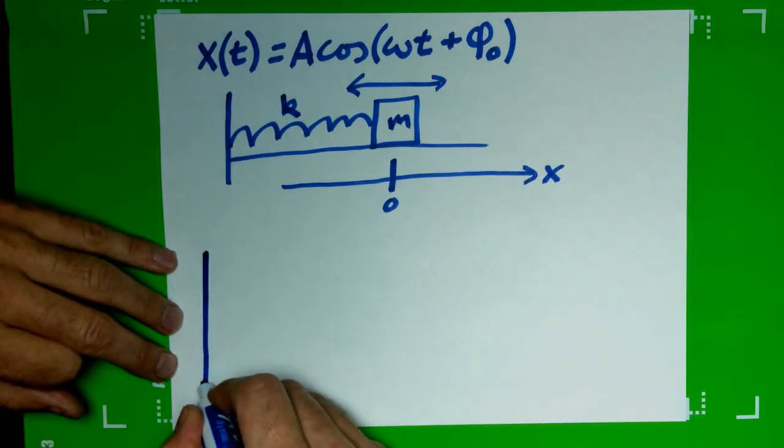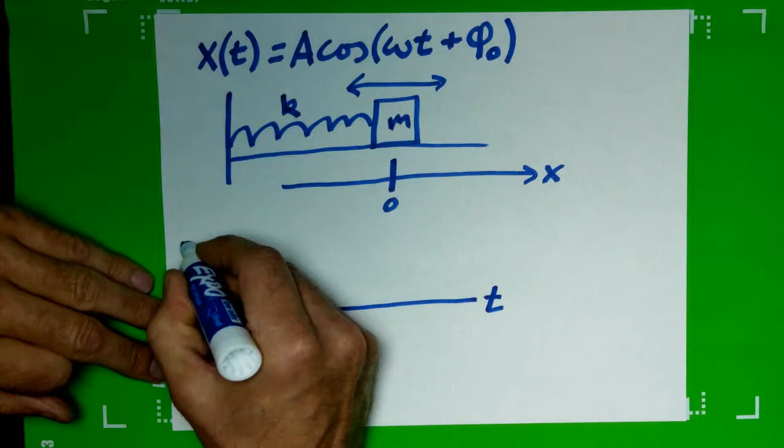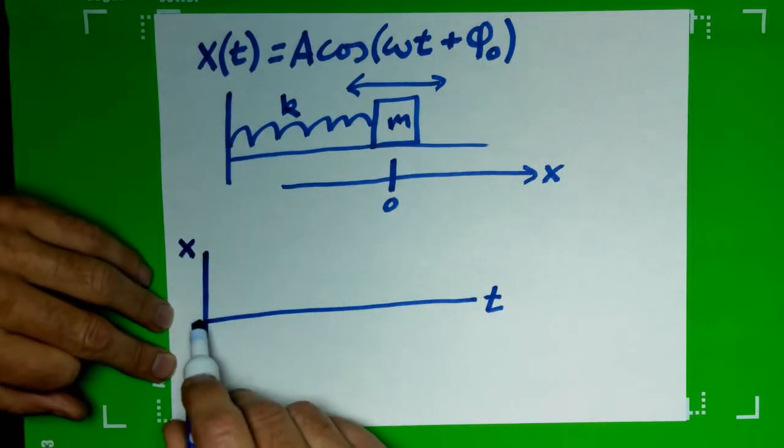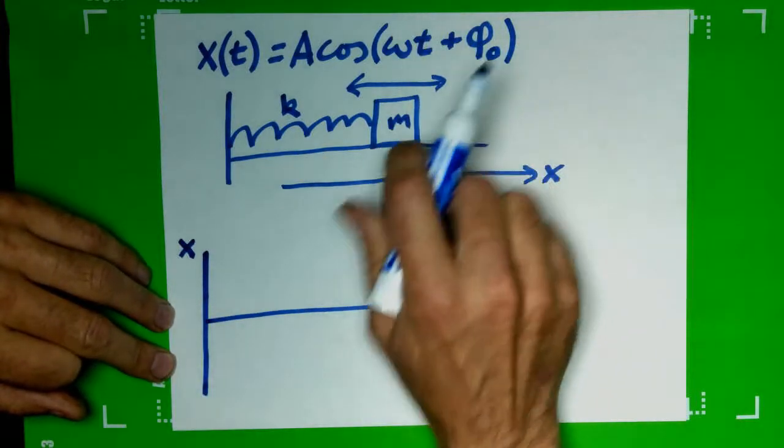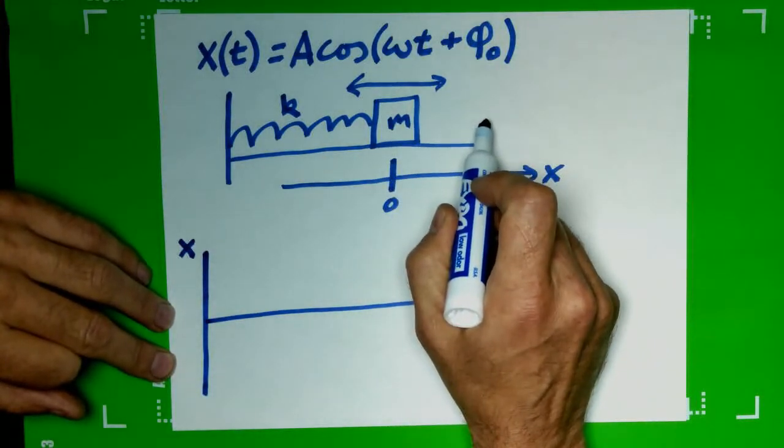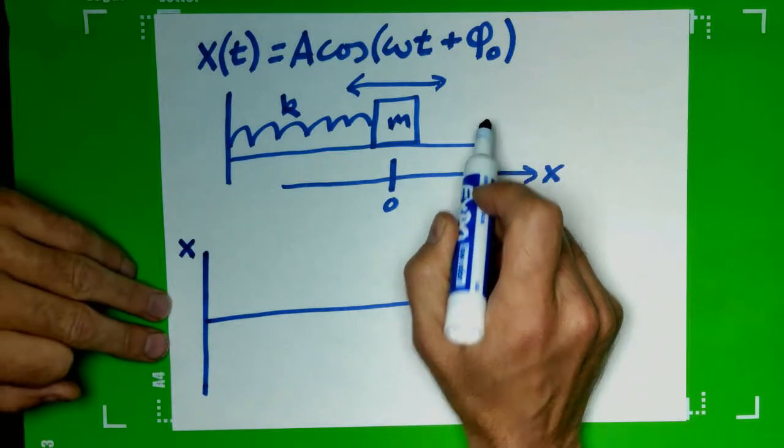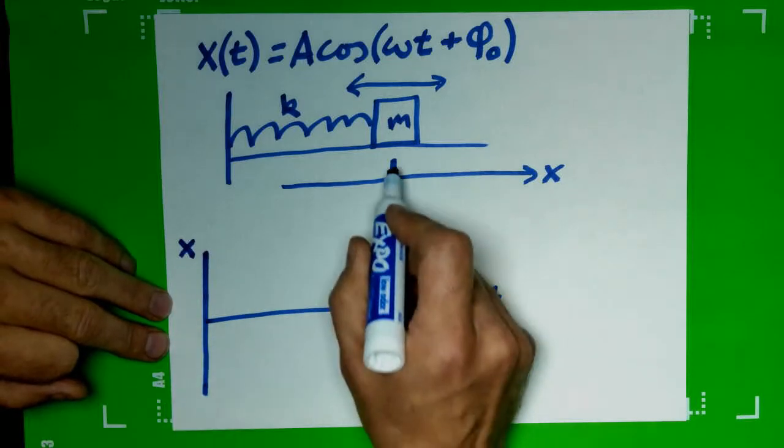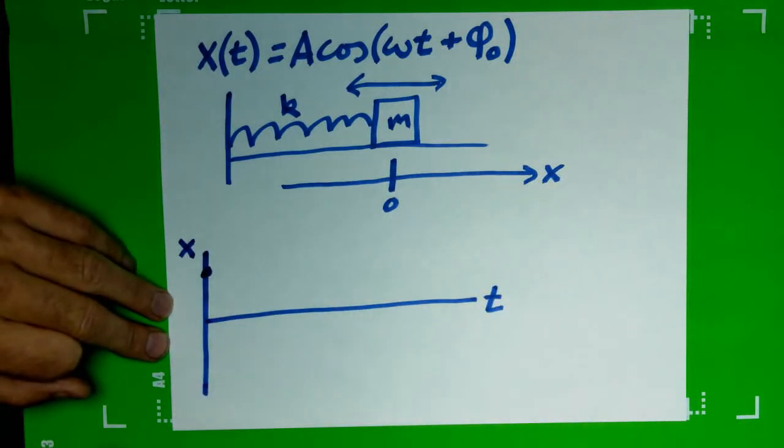So if we have a time axis and we have a displacement axis, then at t equals zero where would it be? We've taken this block, pulled it to this position over here, and as soon as we let go we start our time. We've pulled it some positive distance, so we can put a little dot there.